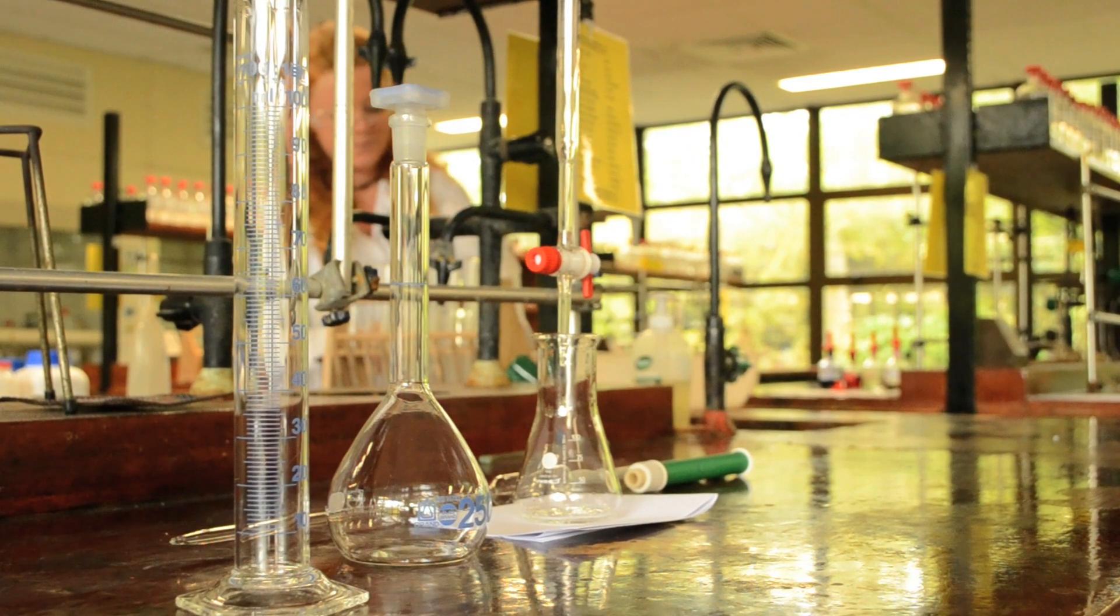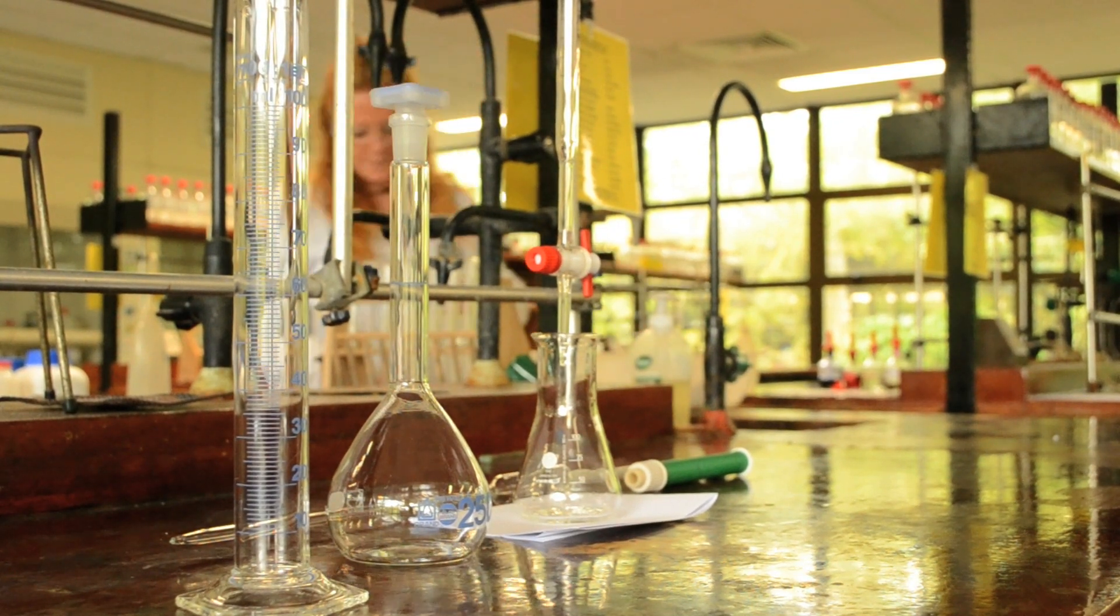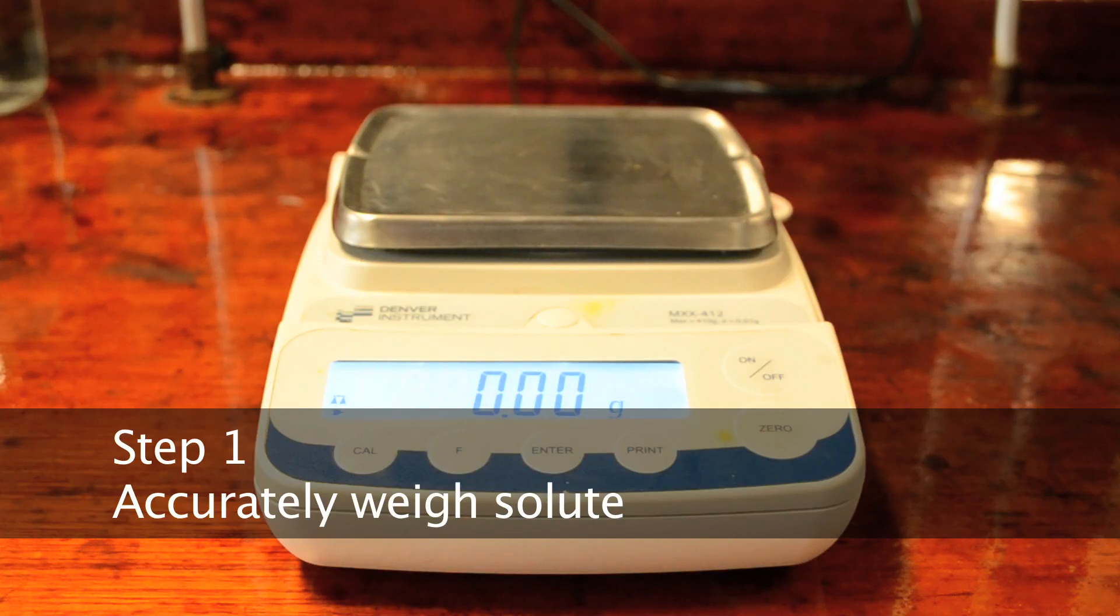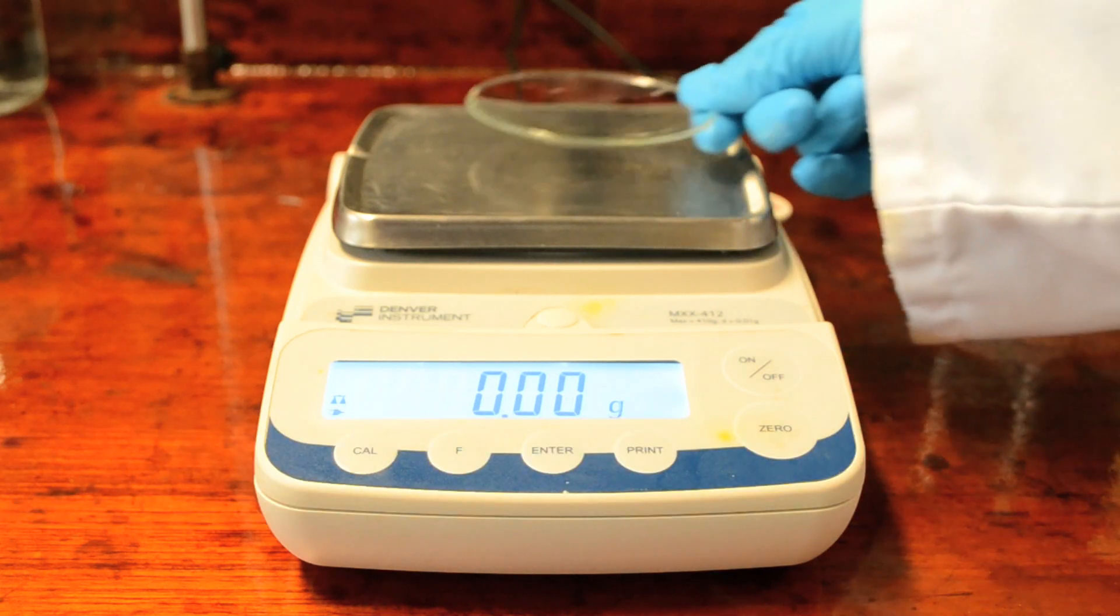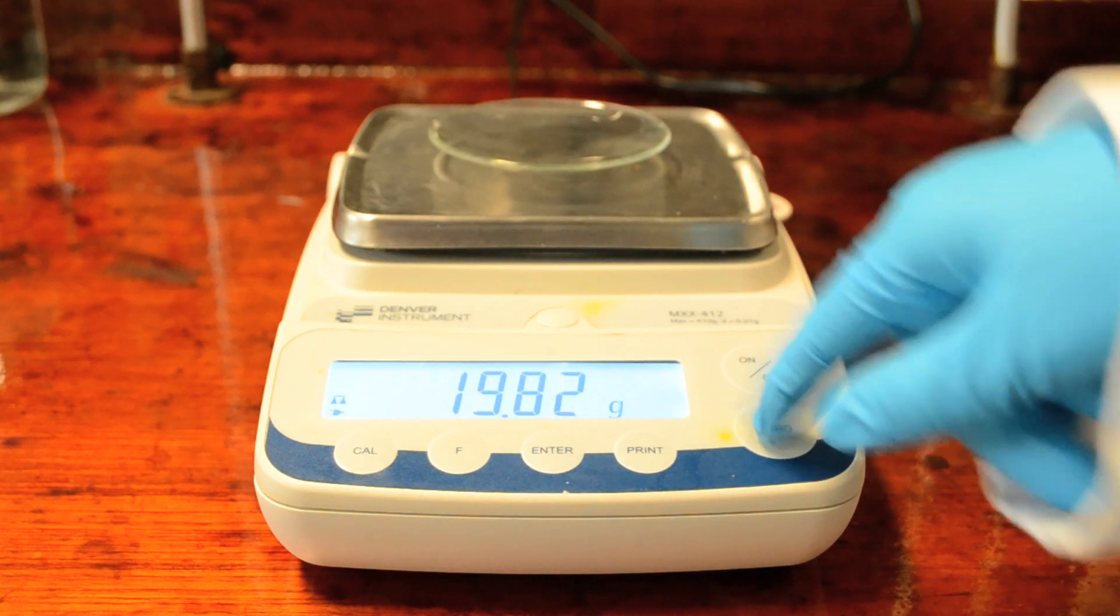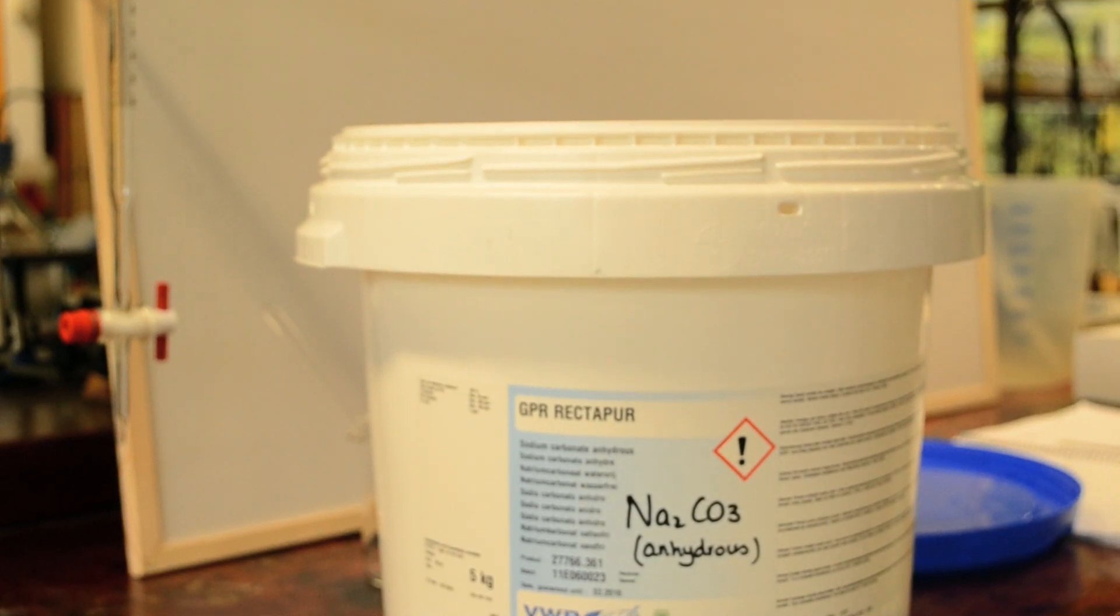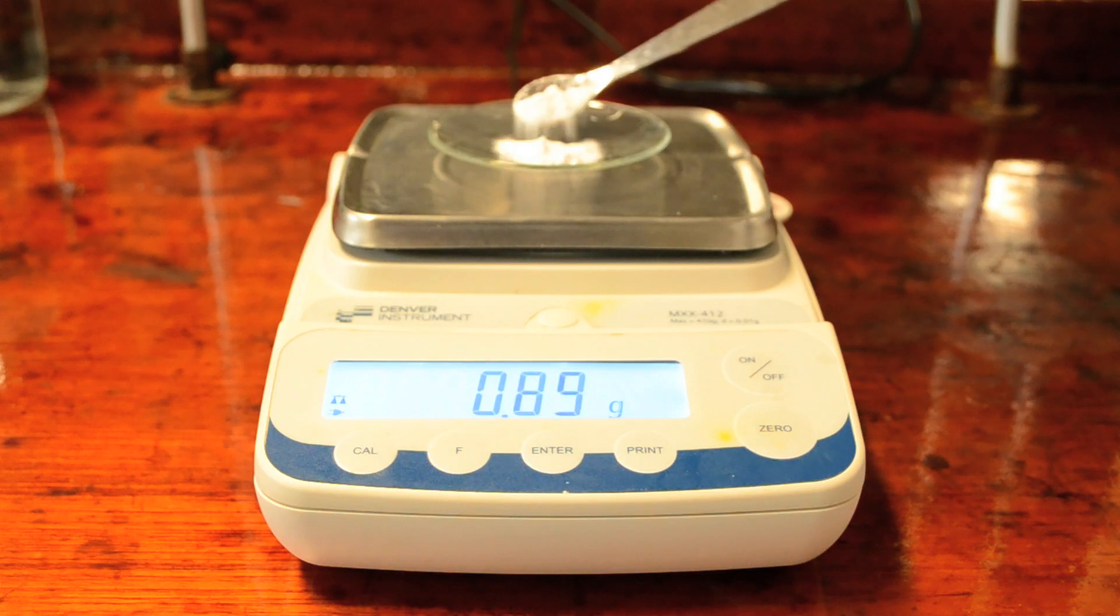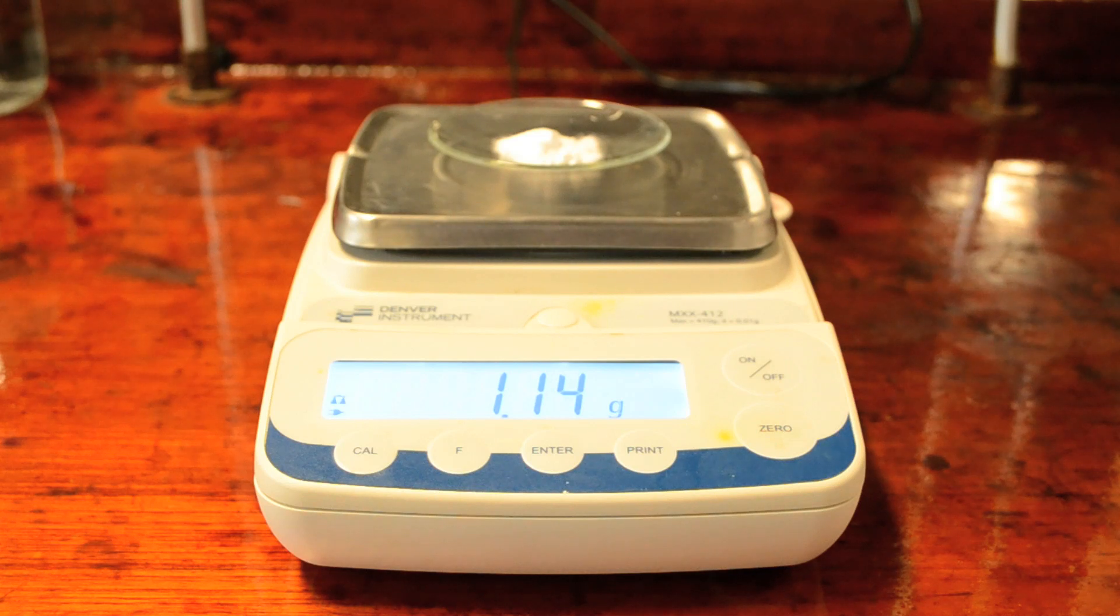I'm going to take you through the steps to accurately weigh out our solute that we're going to use to make up a standard solution. To do this, we're going to use a laboratory balance. I then place a clock glass on top of the balance and re-zero. I'm aiming to weigh out 1.3 grams of anhydrous sodium carbonate. It doesn't have to be exactly 1.3 grams as long as I know exactly how much I've weighed.